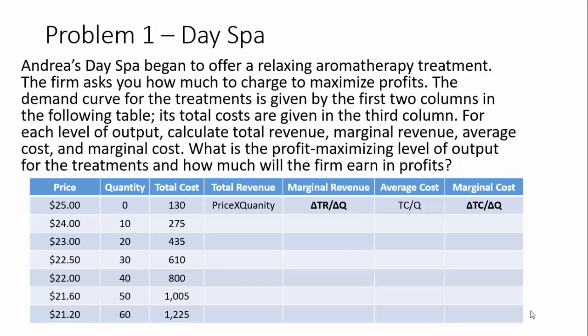Problem one: Day Spa. Andrea's day spa began to offer a relaxing aromatherapy treatment. The firm asks you how much to charge to maximize profits. The demand curve for the treatments is given by the first two columns in the following table, and its total costs are given in the third column. For each level of output, calculate total revenue, marginal revenue, average costs, and marginal costs. Finally, answer the question: what is the profit-maximizing level of output for treatments and how much will the firm earn in profit?